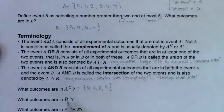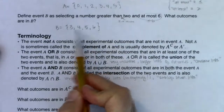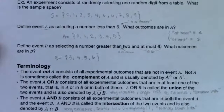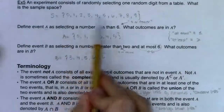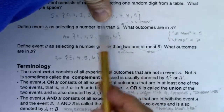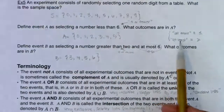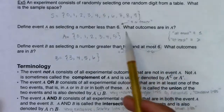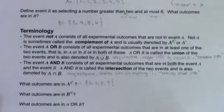By the same reasoning, B complement: B had three, four, five, six. The sample space had zero through nine, so what's missing from B? Zero, one, two, seven, eight, nine were not in B — meaning they are in B complement. The complement is literally the list of everything from your sample space that didn't make it into the event.